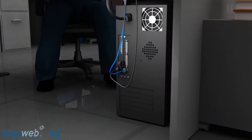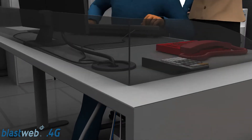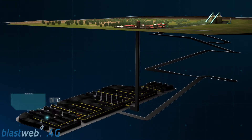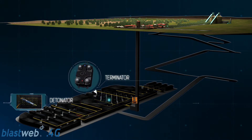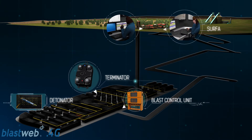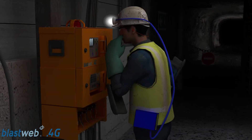The surface blast controller communicates to the BCUs underground and is able to safely initiate selected BCUs from the surface. The BlastWeb system can be configured to the mine's requirements and can accommodate a maximum of 24 BCUs per surface blast controller. The system is linked together through the available communication infrastructure to form a network between the BCUs and the surface blast controller. The BlastWeb system also provides real-time information and allows management to view the status and activity on the BlastWeb network. The final step underground is to activate the BCU for centralized blasting.